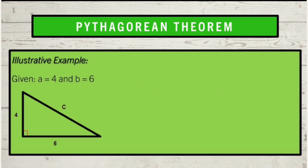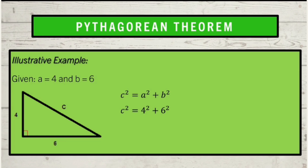Let us now proceed. We are going to use the Pythagorean theorem to find the unknown side of a given triangle when two of its sides are given. For this right triangle, the given sides are the legs and the missing side is the hypotenuse. We will use C squared equals A squared plus B squared. By substituting the given values, we have C squared equals 4 squared plus 6 squared, which gives us C squared equals 16 plus 36, so C squared equals 52.